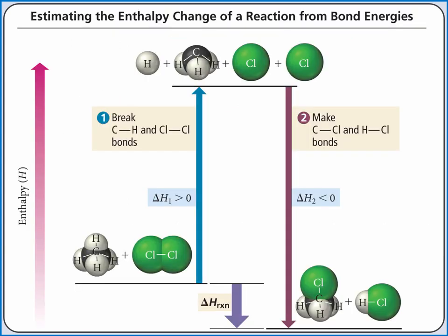For example, if we have the reaction of methane and chlorine to produce CH₃Cl and HCl, we need to break one carbon-hydrogen single bond and one chlorine-chlorine single bond in our reactants, and we'll form one carbon-chlorine bond and one hydrogen-chlorine bond in our products.